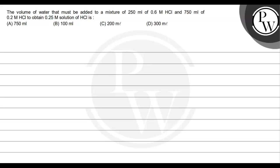The question says: the volume of water that must be added to a mixture of 250 ml of 0.6 molar HCl and 750 ml of 0.2 molar HCl to obtain a 0.25 molar solution of HCl. The options are: 750 ml, 100 ml, 200 ml, and 300 ml.